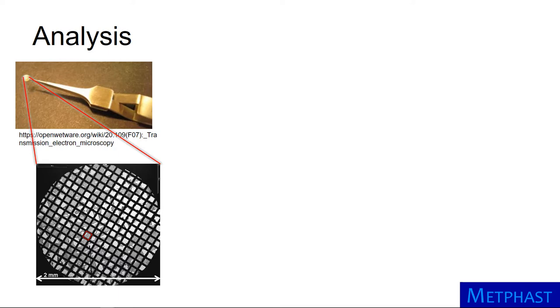At low magnification, we can see the circular shape and square openings, often called windows, formed by the copper grid.